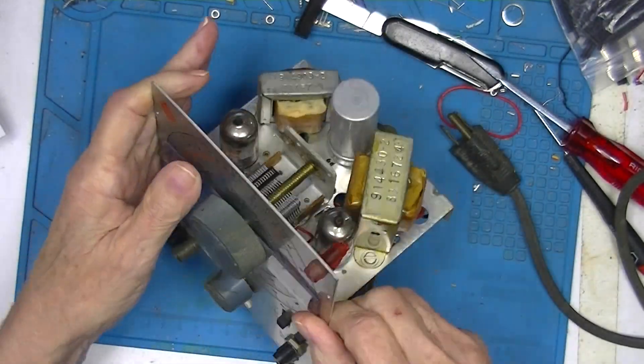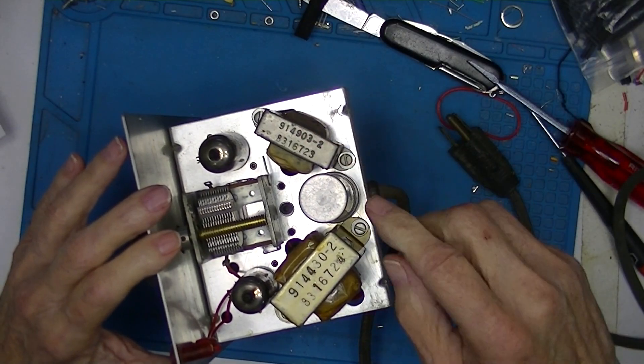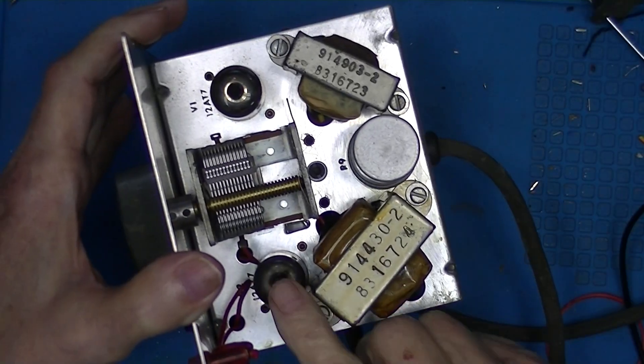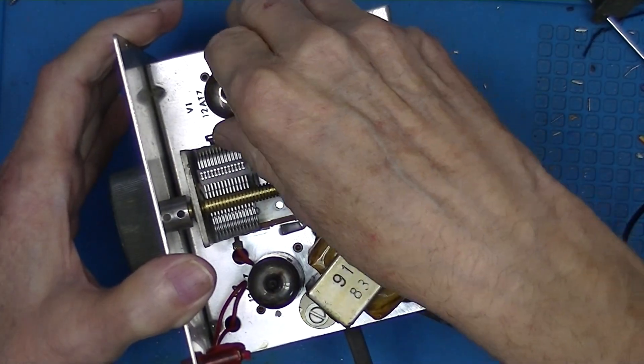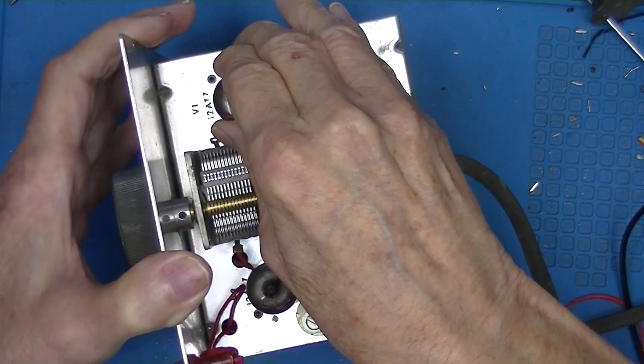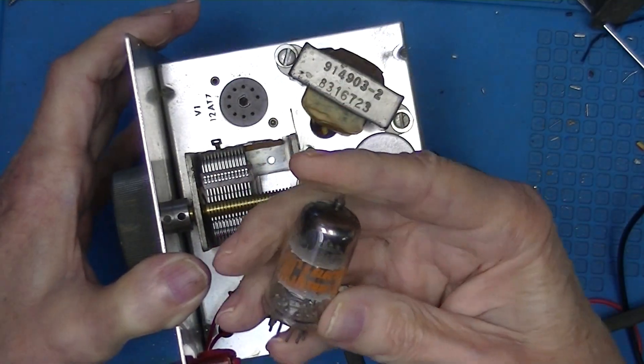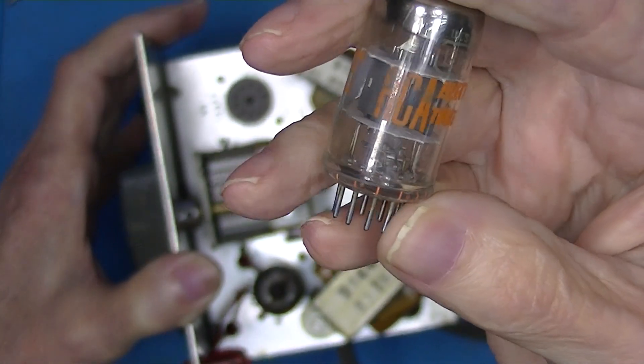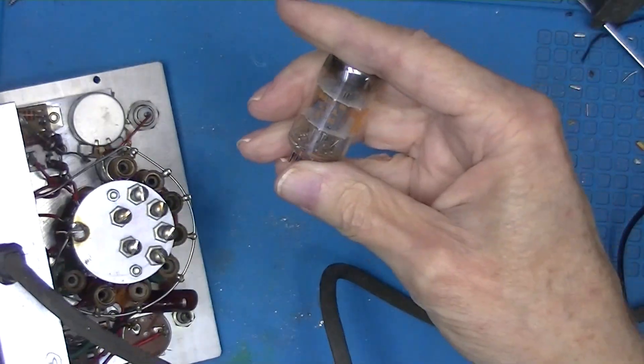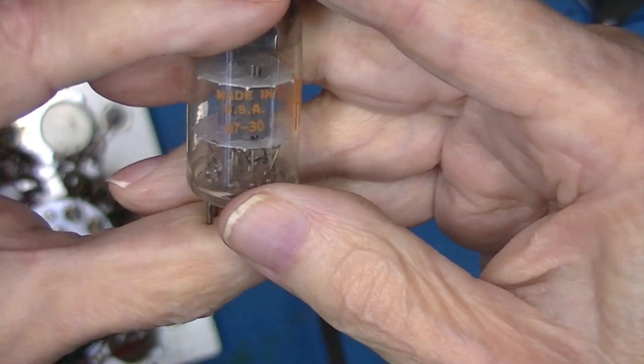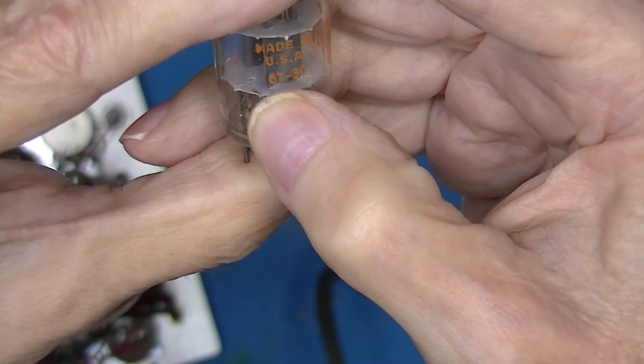There are two transformers, an electrolytic capacitor. We have two vacuum tubes here, each a 12AT7. Take one of these out. So they are RCA electron tubes and we should have a date code of 6730, so the 30th week of 1967.